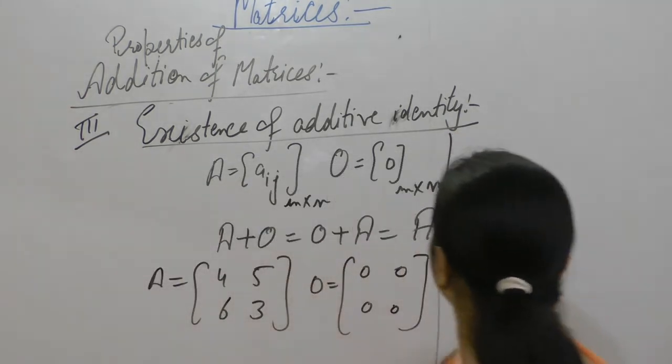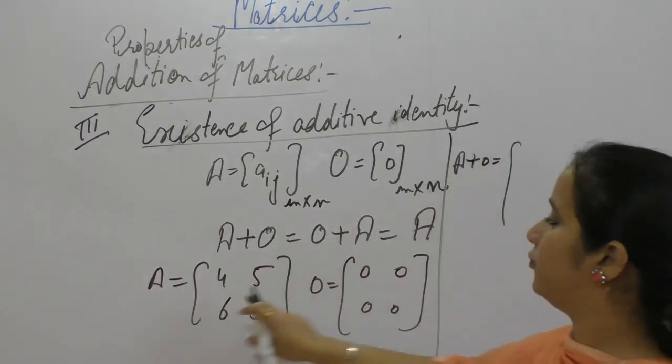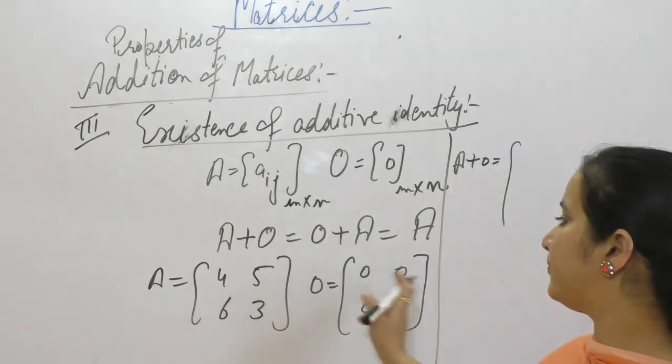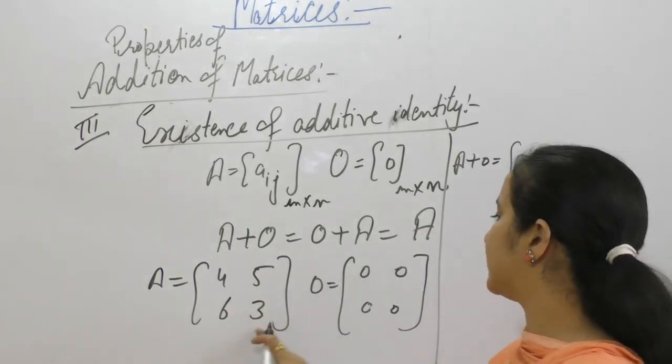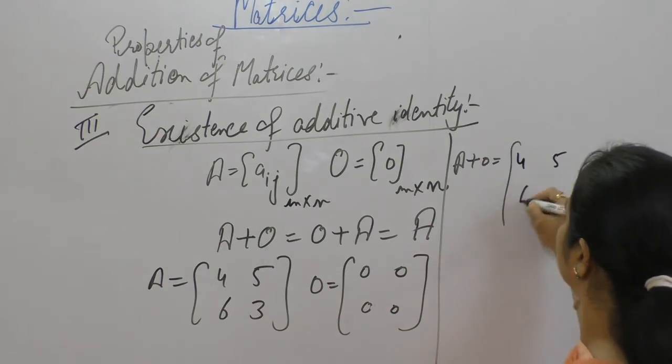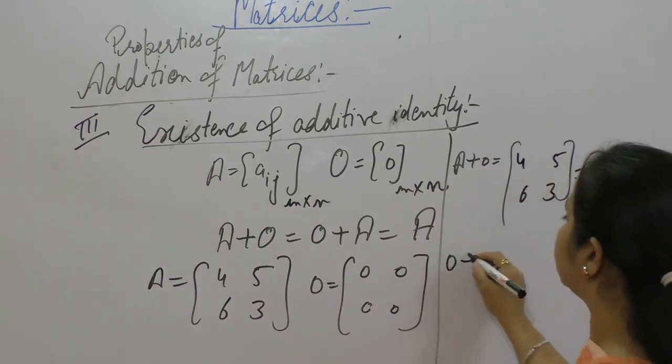First we add A plus 0: 4 plus 0, 5 plus 0, 6 plus 0, and 3 plus 0. So that is equal to A.